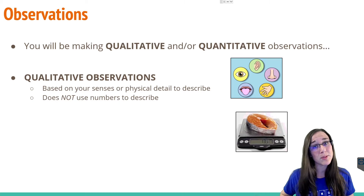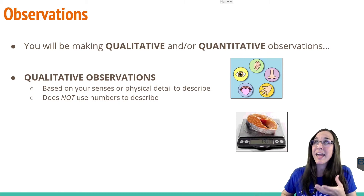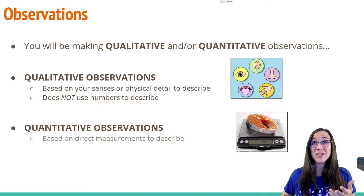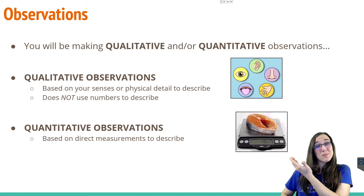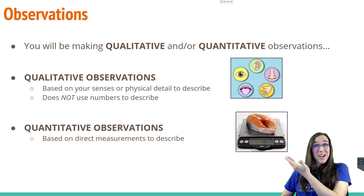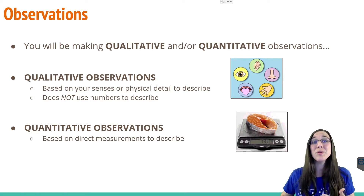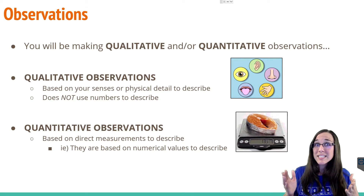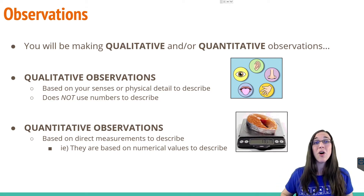Quantitative observations — I like to think of the word quantity like 'how much' — are observations that involve a numerical value. So if you were to take the mass of something in a lab and write it down in grams or pounds, that would be a quantitative observation. Or if you were to measure a distance with a ruler, that specific distance is a direct measurement — all quantitative.